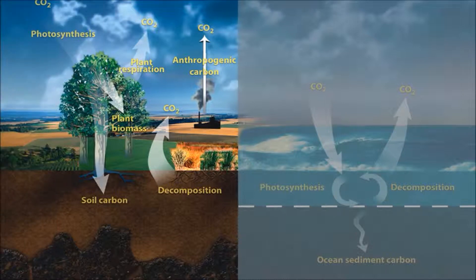So far, we've seen a lot of carbon entering the atmosphere. So how does the opposite happen? How is it removed from the atmosphere? Well, by photosynthesis. Plants fix carbon from carbon dioxide into their tissues. So a tree is a large store of carbon, fixed into solid form.